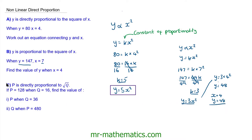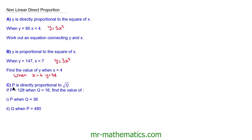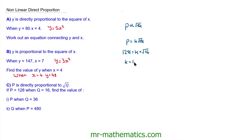Now try to work out question c by firstly finding the formula connecting p and q, then using that formula to work out p when q is 36, and then to work out q when p is 480. You can pause the video and resume it when you're ready. Welcome back. For question c we know that p is directly proportional to the square root of q, so we write this as p is directly proportional to the square root of q. Rewriting as an equation: p is equal to k root q. We're told that p is 128 and q is 16. The square root of 16 is 4, so k is 128 divided by 4, which gives us 32.